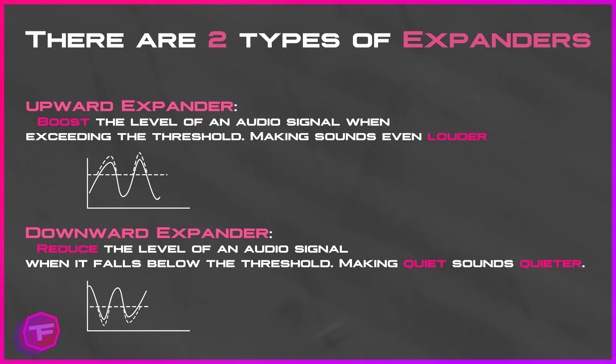There are five commands that operate an expander: attack, release, threshold, ratio, and range. The attack sets how fast the expansion responds when a signal level crosses the threshold. The release sets how fast the expansion recovers after a signal level crosses the threshold. The threshold sets the level where expansion begins. The ratio sets the amount of expansion applied, and the range limits the maximum amount of applied gain change.